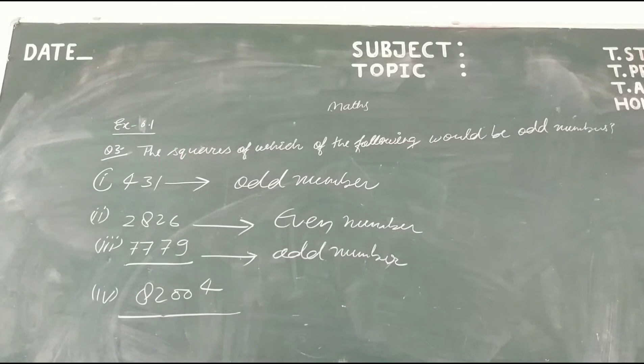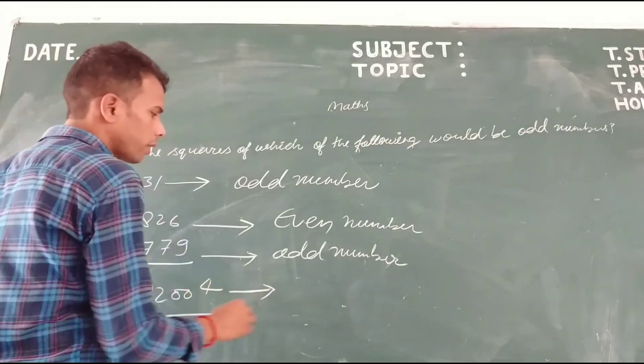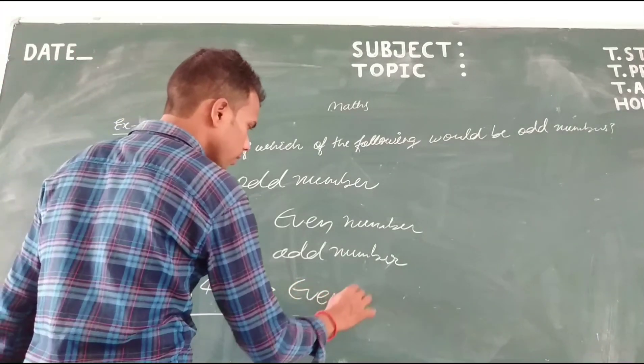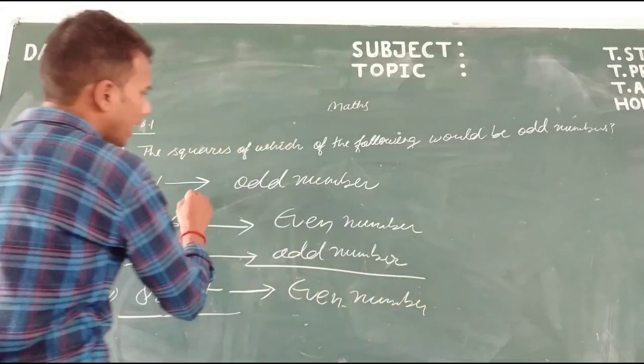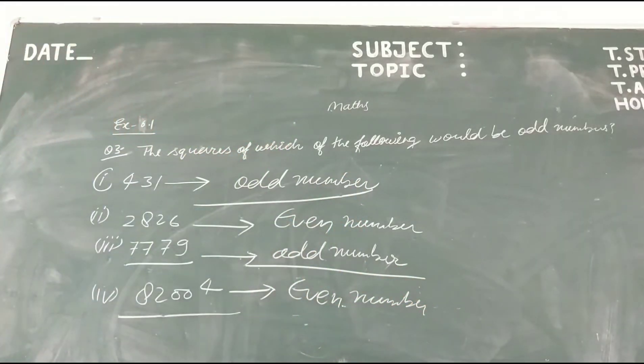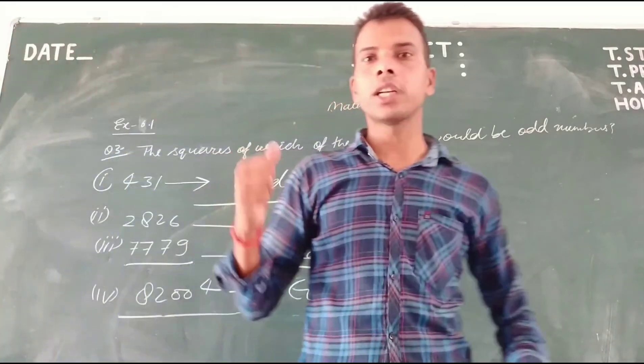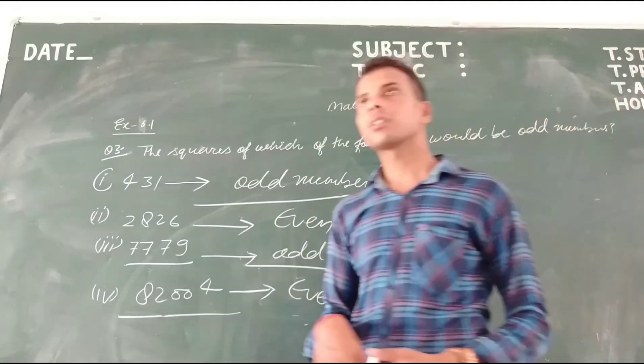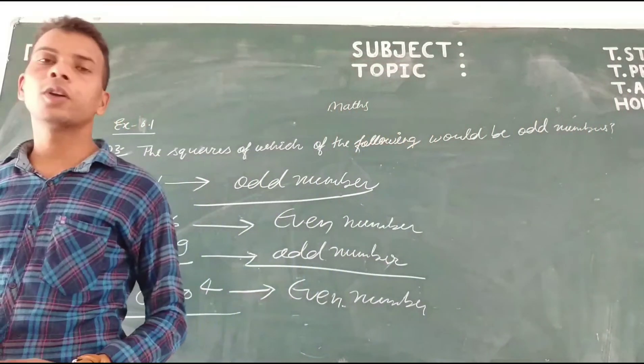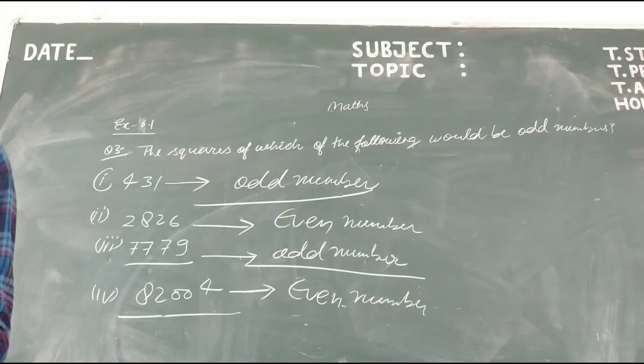This number is an even number, so the square of this number is also even. So the first number and third number are odd numbers. I hope you understood these questions well. The next question will be explained in our next video lecture. Thank you and have a nice day.